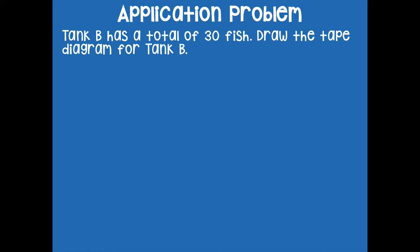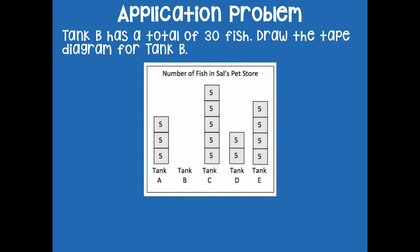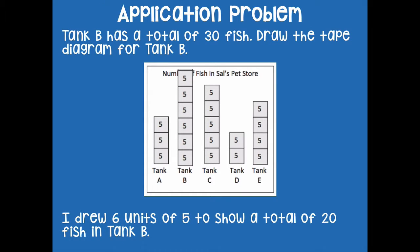Tank B has a total of 30 fish — draw the tape diagram for tank B. I'm going to add in units of five until I have 30 fish for tank B: 5, 10, 15, 20, 25, 30. That represents my 30 fish in tank B. I do six units of five to show a total of 30 fish in tank B.